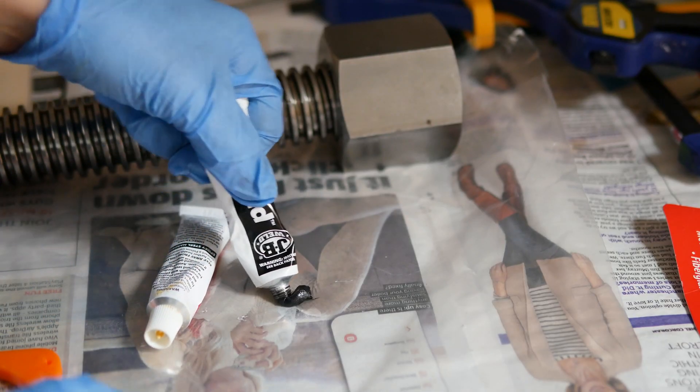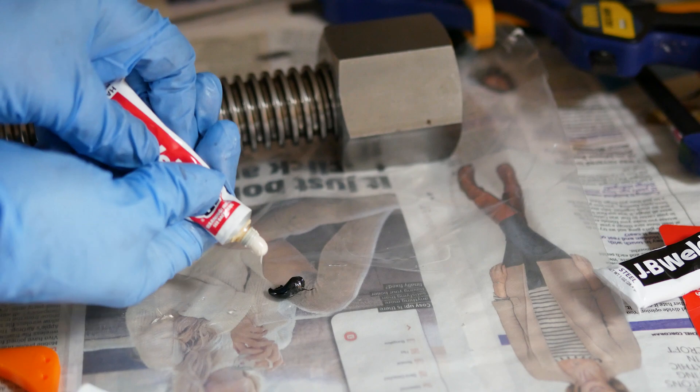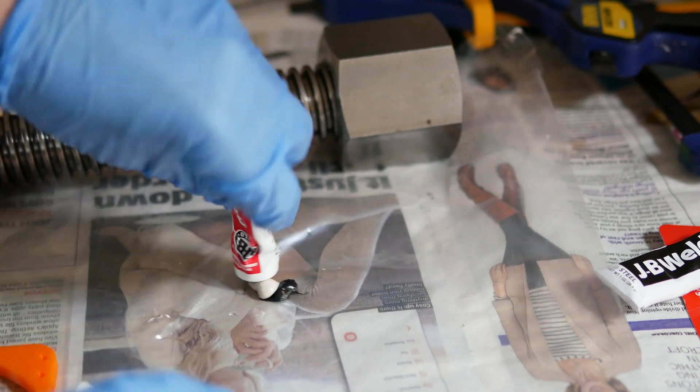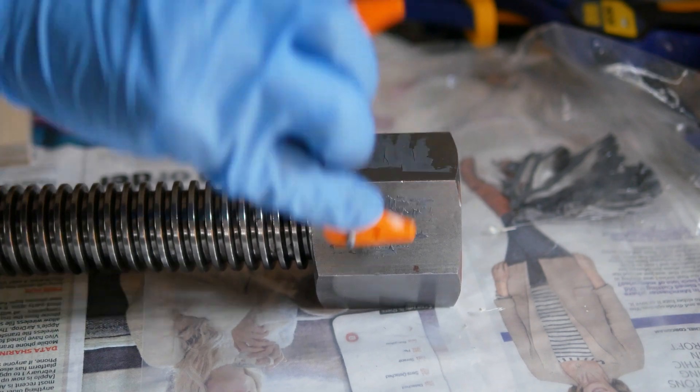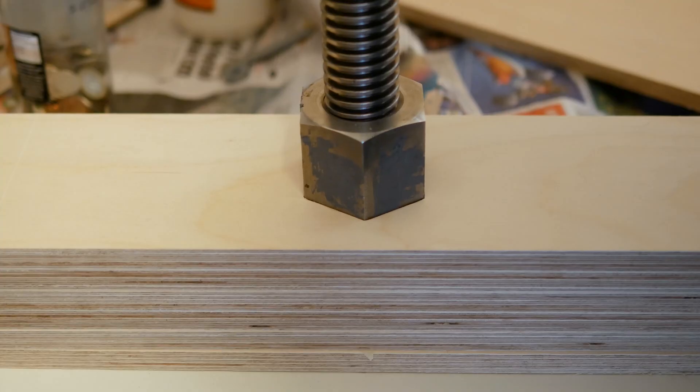To secure the lead screw nut in place just a little bit better I'm using some JB Weld and I'm just applying it to all sides of the lead screw nut and then when I'm pressing it in hopefully that should be holding everything in place.